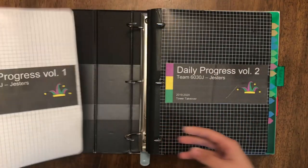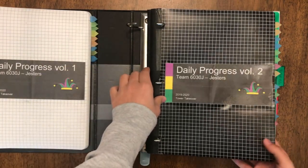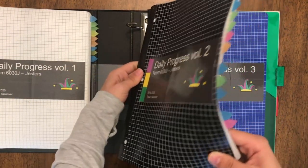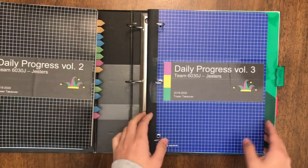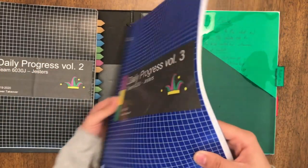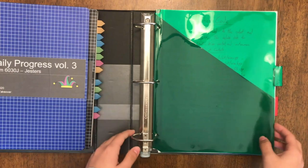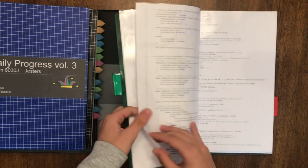Our engineering notebook at the time of states consisted of two graph ruled books and a section of printed code in the back. We never got to a third book. In total we had about 300 pages of written content and about 60 pages of printed code.